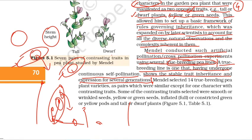Mendel selected 14 true-breeding pea plant varieties as pairs which were similar except for one character with contrasting traits. Some of these contrasting traits were then studied in his experiments.